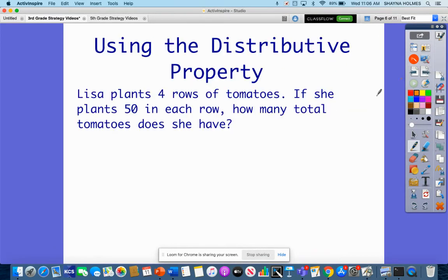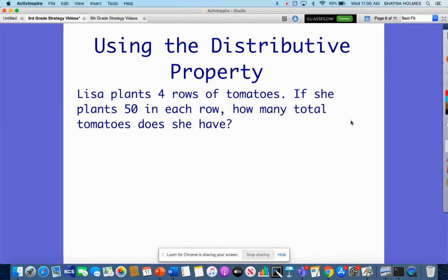Let's look at another strategy. We have a word problem here. It says Lisa plants 4 rows of tomatoes. If she plants 50 in each row, how many total tomatoes does she have? So she has 1, 2, 3, 4 rows and she has 50 in each.